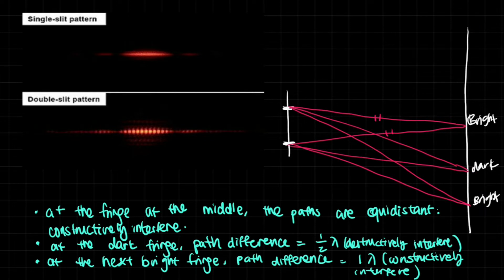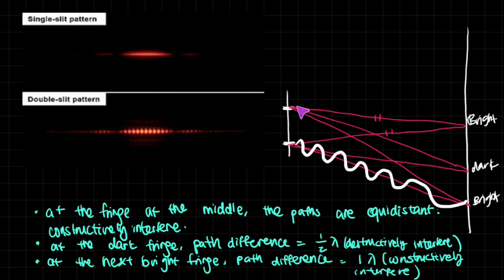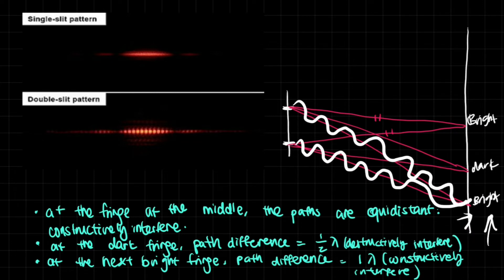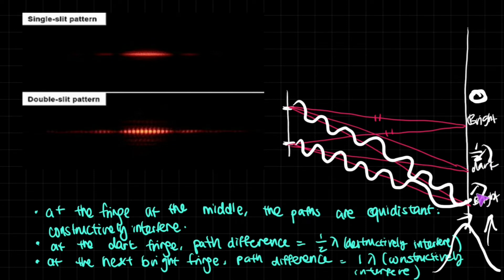At the second bright point, one wave has traveled 6 units and the other has traveled 7 units — a path difference of 1 full lambda. They are going in the exact same direction, so the resultant amplitude is large and there is a bright spot again. So: the central bright fringe has a path difference of 0, the first dark fringe has a path difference of 1/2 lambda, and the second bright fringe has a path difference of 1 lambda.